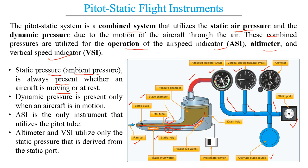Static pressure is also known as ambient pressure and is always present whether the aircraft is moving or at rest. Dynamic pressure is present only when the aircraft is in motion — whenever the aircraft moves, air accelerates into it and the pressure caused by that motion is the dynamic pressure. The airspeed indicator is the only instrument which uses the pitot tube. The altimeter and VSI utilize only the static pressure derived from the static port.